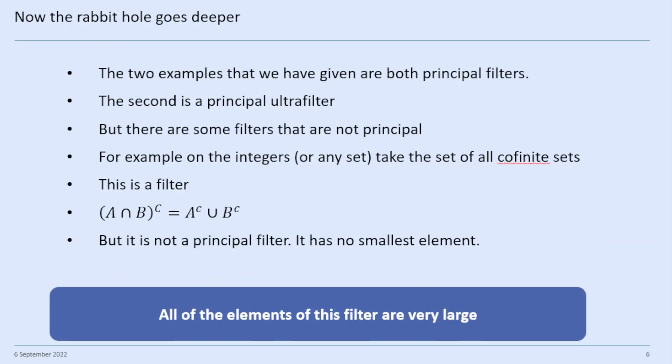But there are some filters that are not principal. For example, if X is the set of integers, and we take the set of all co-finite sets, this is a filter. A co-finite set is a set whose complement is finite. Given a co-finite set, any superset of it is also co-finite because its complement will be even smaller, so it's still finite. And if we intersect two co-finite sets, their complement is equal to the union of the complements of the two sets, so it's still going to be finite — meaning the intersection of two co-finite sets is also co-finite and stays in the filter. But it's not a principal filter — it has no smallest element.